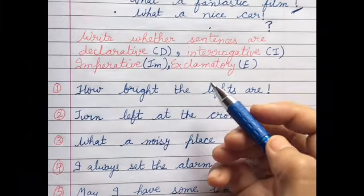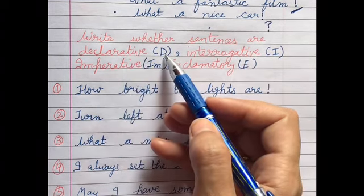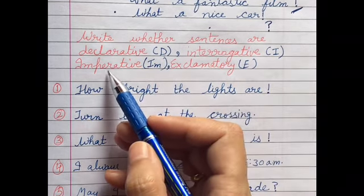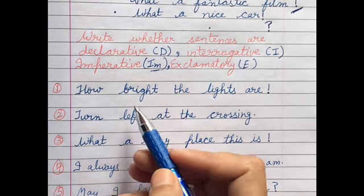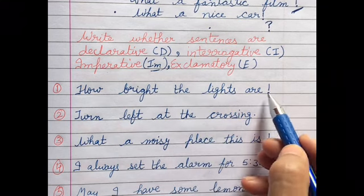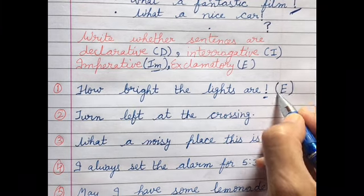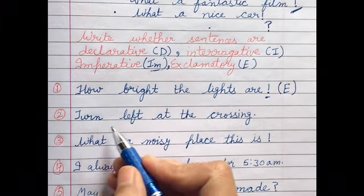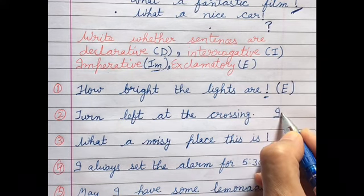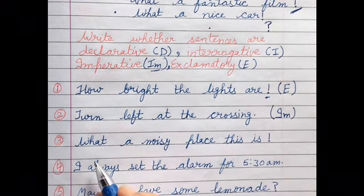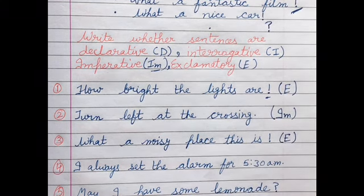Now let us take up a practice exercise. Write whether the sentences are declarative (D), interrogative (I), imperative (Im), or exclamatory (E). First: 'How bright the lights are!' — this has an exclamation mark, so it is an exclamatory sentence. Second: 'Turn left at the crossing.' — in this we are giving a command, so it is imperative. Third: 'What a noisy place this is!' — exclamatory sign, we are expressing a feeling, so it is exclamatory.